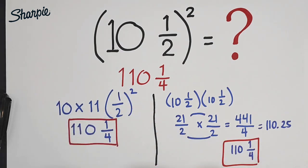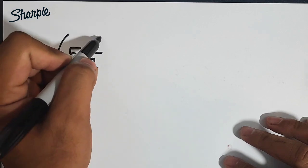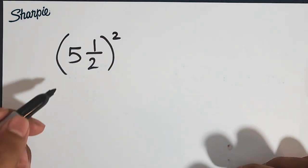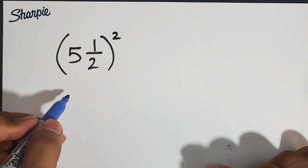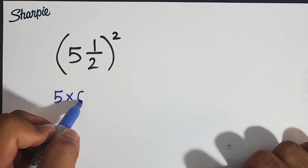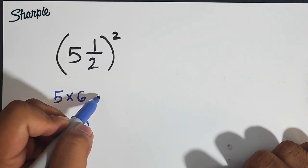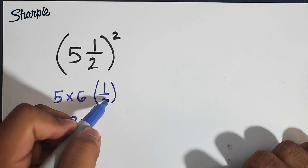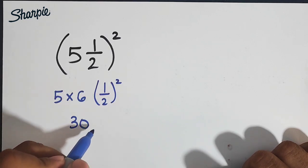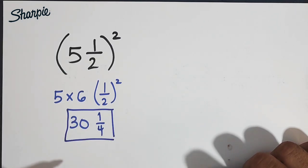So we will try this trick using two more examples. Now let us try this trick using this example. We have 5 and 1 half raised to the second power. Remember, our trick is that we need to copy this number. We have 5 and then multiply 5 by the next number, which is 6. And 5 times 6, that is 30. And then this fraction will be raised by 2. And we know that 1 half raised to the second power is 1 fourth. Therefore, the answer here is equivalent to 30 and 1 fourth.